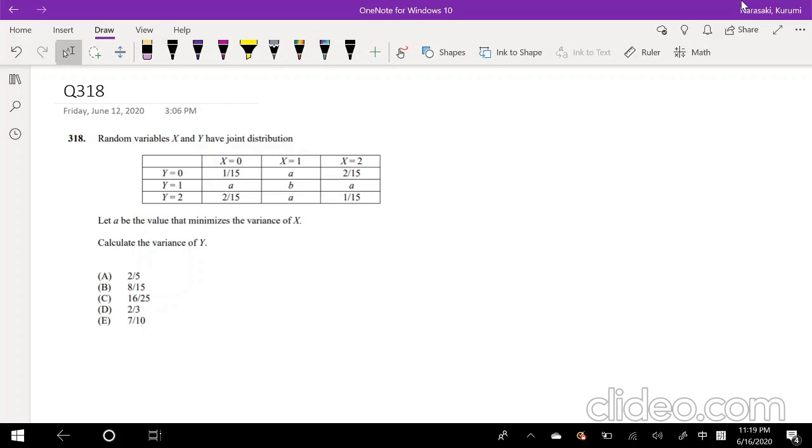So the question asks: random variable X and Y have joint distribution given by the chart. Let a be the value that minimizes the variance of X. Calculate the variance of Y. Okay, so we want to try first to find variance of X so we can minimize that. So I'm going to simplify this graph into my own chart. I'm going to put X and its distribution right here.